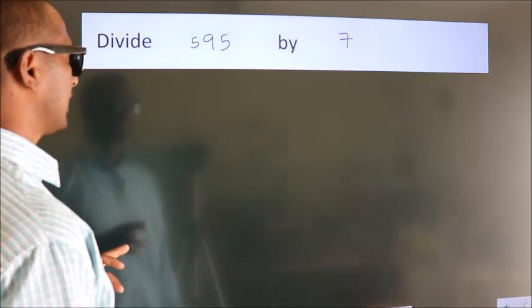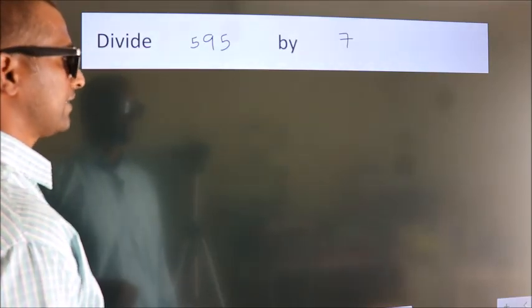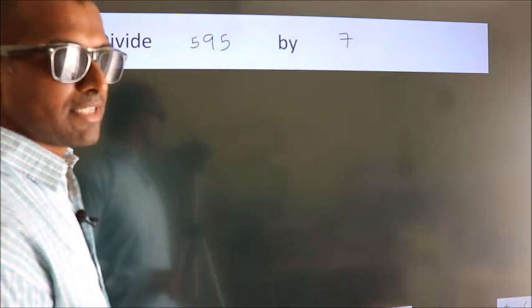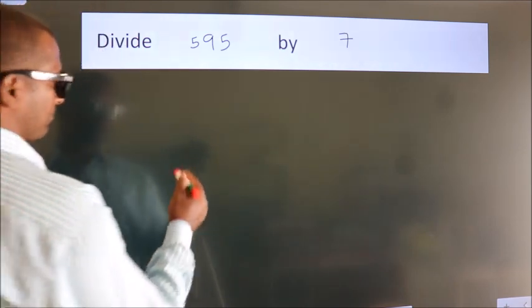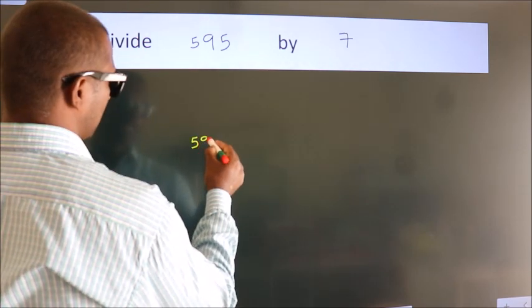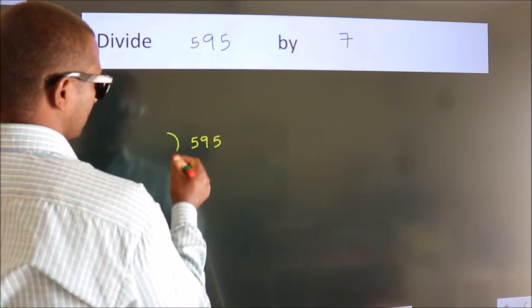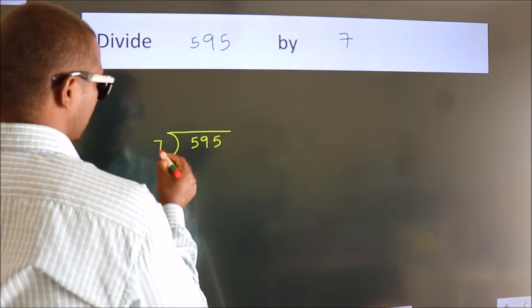Divide 595 by 7. To do this division we should frame it in this way: 595 here, 7 here.